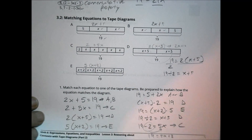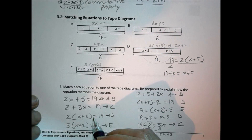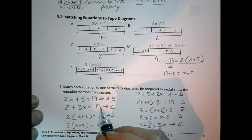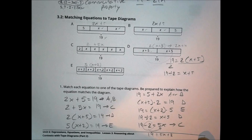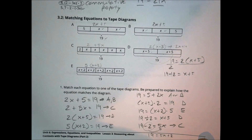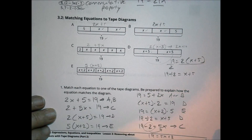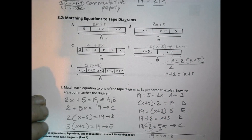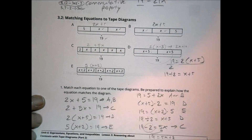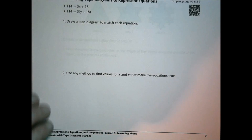The next activity asks you to take these equations and sort them into a category of your own choosing — maybe by parentheses, by multiplication, or by how you would isolate x. That part is up to you.